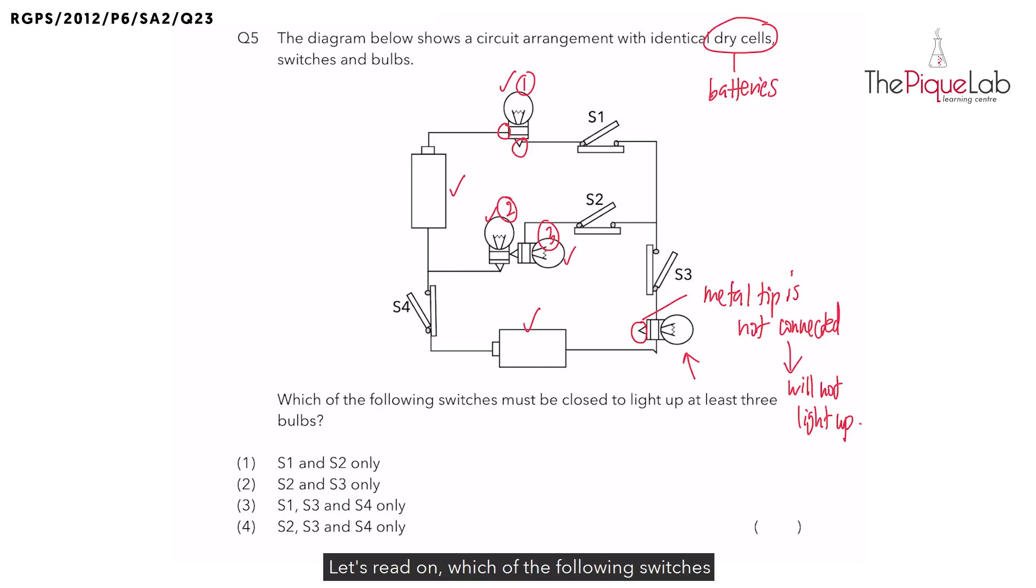Let's read on. Which of the following switches must be closed to light up at least three bulbs? Usually for this type of question involving switches closing, I would recommend going through one option at a time. But not for this question. Look, the question wants at least three bulbs to light up. But out of the four bulbs in the circuit, one bulb will definitely not light up as it is not connected properly.